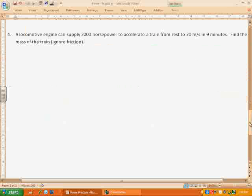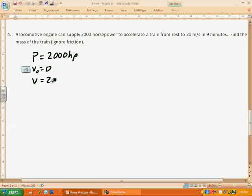A locomotive engine can supply 2000 horsepower, so this time it's given me the power, to accelerate a train from rest, so initial velocity is 0, to 20 meters per second, in 9 minutes. Find the mass of the train. We're going to ignore friction, so that we don't have to worry about that.